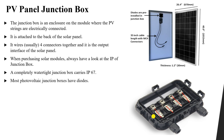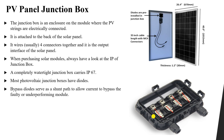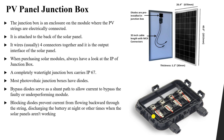Most photovoltaic junction boxes have bypass diodes, which form a shunt path to allow current to bypass a faulty or underperforming module. If there is a fault or shading effect in part of the panel, the bypass diode will bypass that section. The blocking diode, found inside the charge controller, prevents current from flowing back through the string — stopping the battery from charging back through the solar panels when they are not producing power.